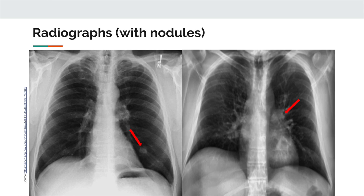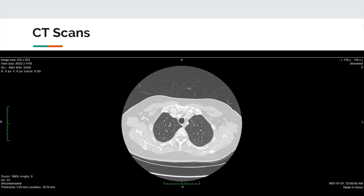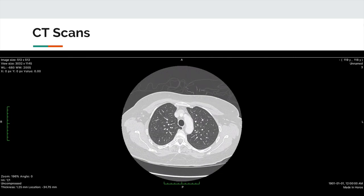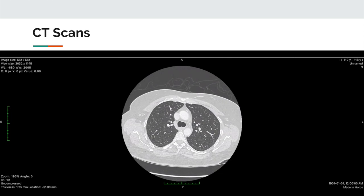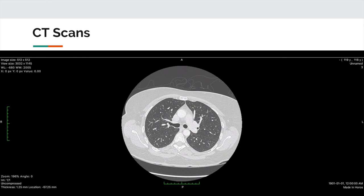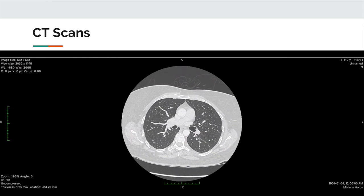And these are some radiographs with nodules. On the left again, we have a real one with a nodule, and on the right, we have a synthetic one that we generated by inserting an artificially grown nodule into a CT scan. Here, we're scrolling through a CT scan. We can clearly observe a difference in radio density between the lungs and the other tissues.